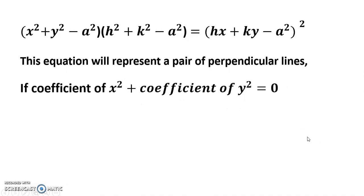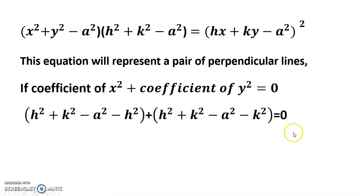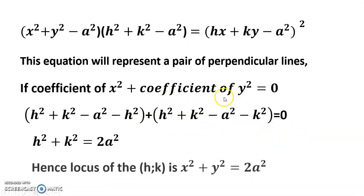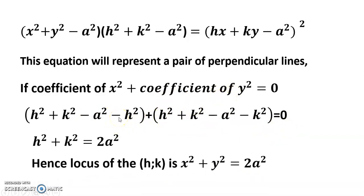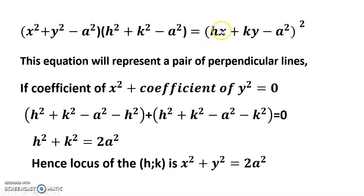If the coefficient of x² plus the coefficient of y² equals zero, then we extract and compare those coefficients from the expanded equation. The coefficient of x² is (h² + k² − a²) − h², and the coefficient of y² is (h² + k² − a²) − k². Adding these and setting the sum to zero gives us the required condition.